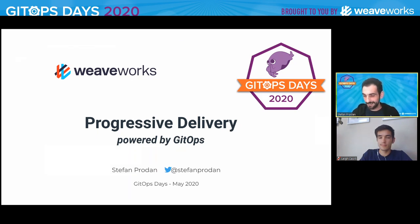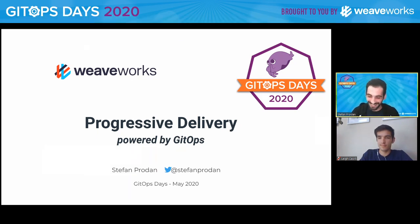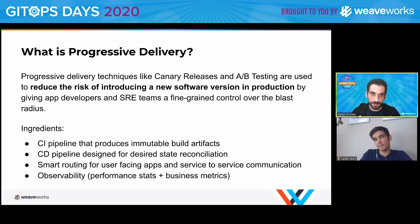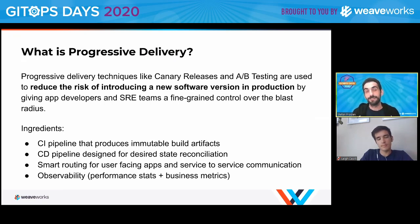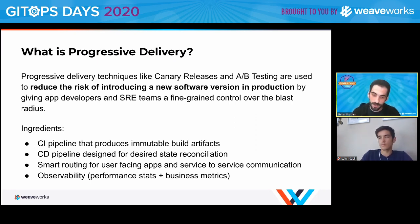So what comes after continuous delivery? Progressive delivery. I'm going to talk about progressive delivery in the GitOps mindset. The idea is that you want to introduce new software versions in your production cluster with less risk than just rolling out the new version to everyone. You achieve that by gradually exposing the new version to your users — rolling to a small percentage, then increasing that percentage. That's how canary releases work.